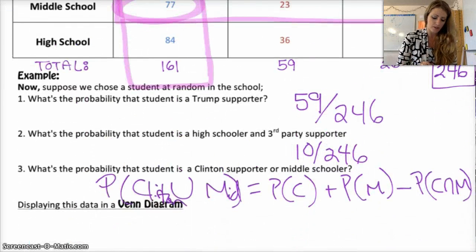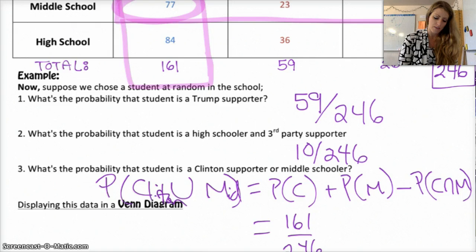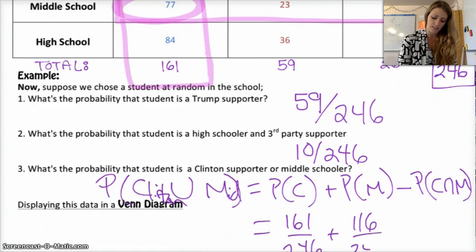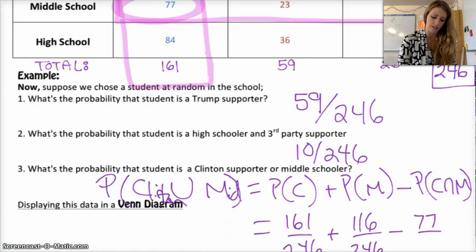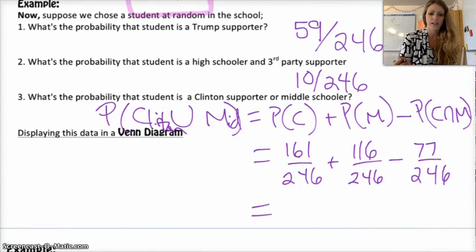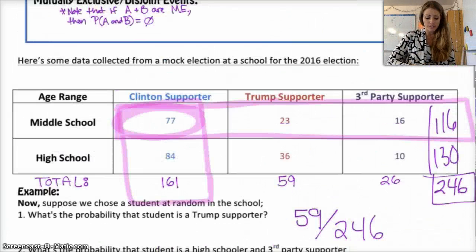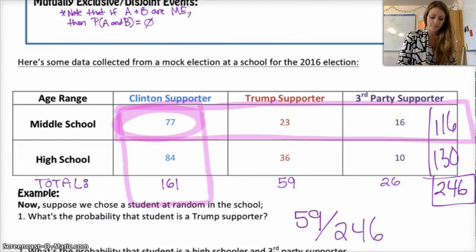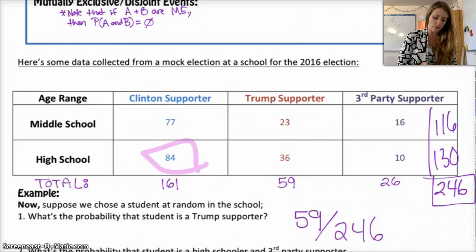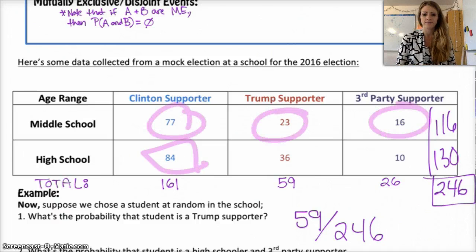So the probability of a Clinton supporter is 161 out of 246, plus the probability of a middle schooler, which is 116 out of 246, minus the probability that they're both a middle schooler and a Clinton supporter, which is 77 out of 246. Add those up and you get 200 out of 246. You'd get the same value if you just added 84 plus 77 plus 23 plus 16.